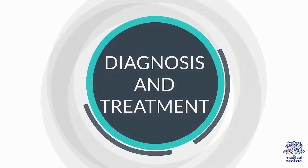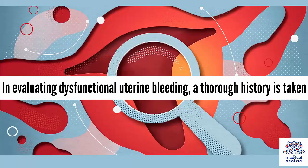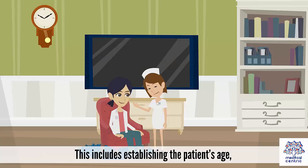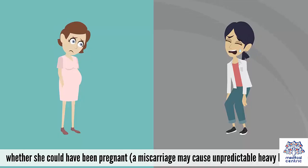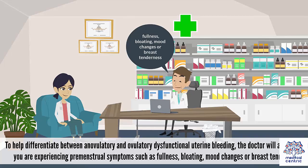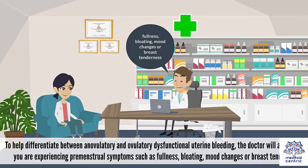Diagnosis and treatment. In evaluating dysfunctional uterine bleeding, a thorough history is taken. This includes establishing the patient's age, birth control method, date of last menstrual period, and whether she could have been pregnant — as a miscarriage may cause unpredictable heavy bleeding. To help differentiate between anovulatory and ovulatory dysfunctional uterine bleeding, the doctor will ask whether you are experiencing premenstrual symptoms such as fullness, bloating, mood changes, or breast tenderness.